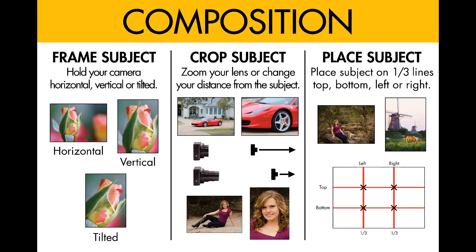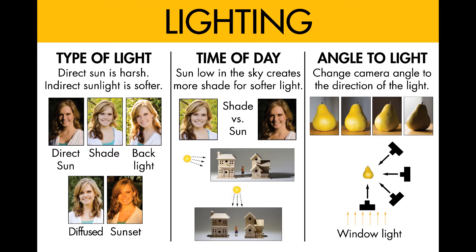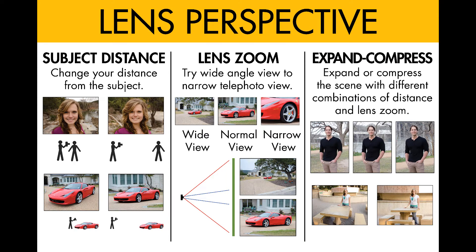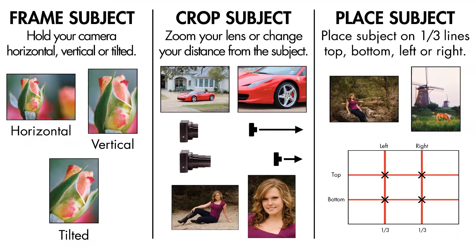The composition card illustrates how to frame, crop and place your subject. The angle card illustrates how to walk around your subject and look at different camera heights and tilts. The lighting card illustrates type of light, time of day and camera angle to the light. The lens perspective card illustrates how the distance from your subject and lens zoom will expand or compress your subject area. Practicing these creative choices until they become a natural reaction will help you learn how to see creatively and develop your creative eye.